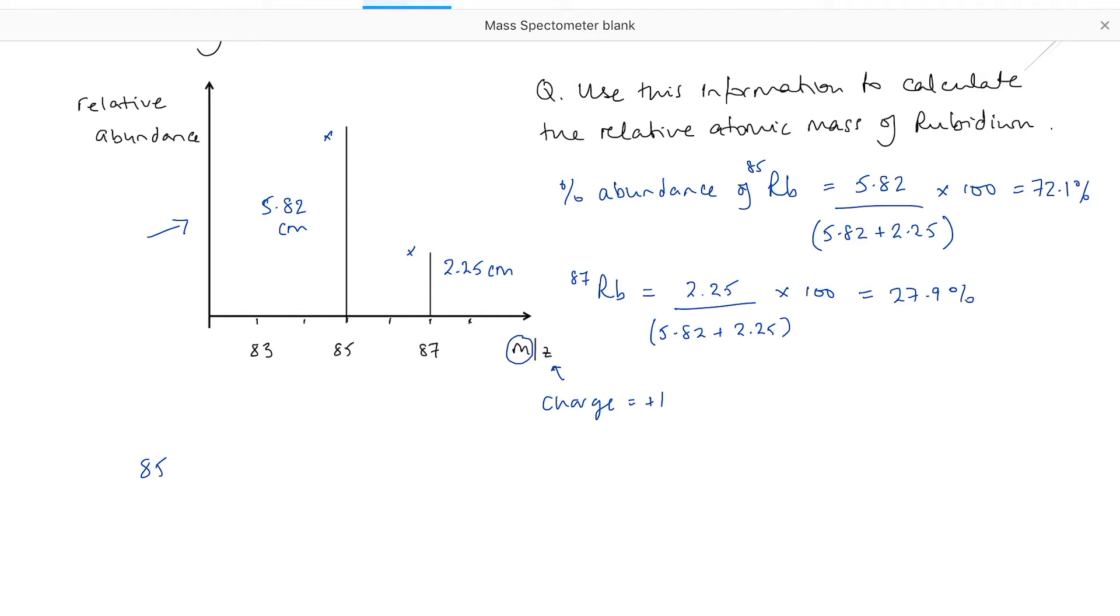we multiply the mass by the percentage abundance for each isotope, and we add them together. So that would be 85 times 72.1 plus 87 times 27.9. As we're working with percentages, we're going to divide the total by 100, and that comes out at 85.6. So the relative atomic mass for rubidium is 85.6.